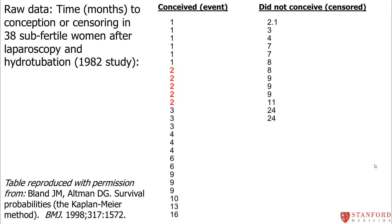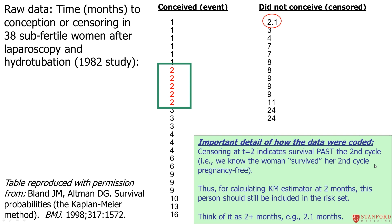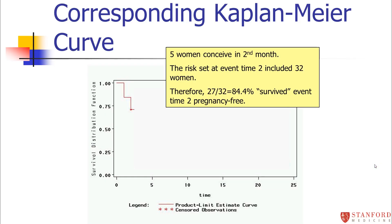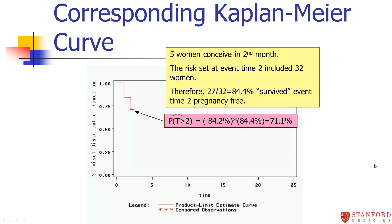In the second month, five women conceived. There was one woman censored after two months — she made it through two months, so her censoring happens after the second month. The risk set was 32 women: we started with 38, six got pregnant in the first month, leaving 32. Therefore 27 out of 32 — about 84% again — survived the second month pregnancy-free. To get the cumulative probability, we multiply the probability of surviving the first month by the probability of surviving the second month, giving a cumulative probability of 71%. We drop the curve down to 71%.